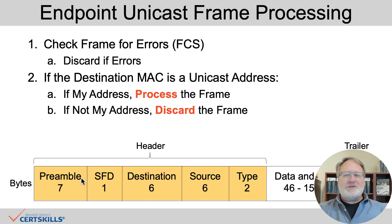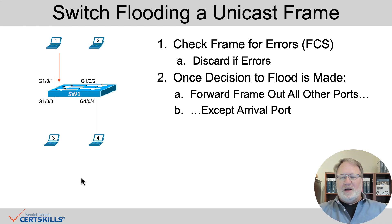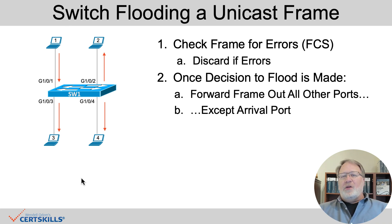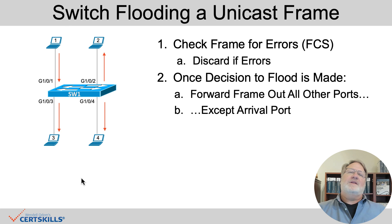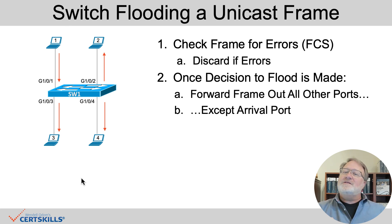Now let's talk about what the switch does in this flooding scenario. Say Laptop 1 is going to send a frame whose destination unicast address is that of Laptop 2. When the switch receives that frame, it floods the frame. Flooding means: forward the frame out all other ports except the arrival port. The arrival port is Gig 1/0/1 in the upper left. The switch then floods the frame out the other three ports — ports 2, 3, and 4 receive the frame. Ports 3 and 4 see it's not their destination address, so they discard the frame.